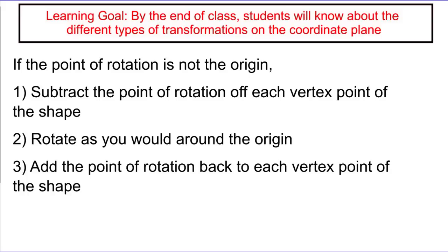So in order to do this, we're going to subtract the point of rotation off of each vertex point, we're going to rotate around the origin, and then we're going to add that point of rotation back, and that's going to place the image where it should be.